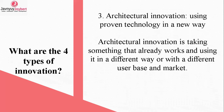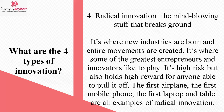The third type is architectural innovation — using a system or technology in a new way. Architectural innovation is taking something that already works and using it in a different way or in a different market. You can take a new product and test it in a starting new market. Number four is radical innovation — you can call it mind-blowing innovation. This is where new industries are born and entire movements are created. It is where some of the greatest entrepreneurs and innovators like to play. It is high risk but also high reward. The first airplane, the first mobile phone, the first laptop, the first tablet, and the first car are examples of radical innovation.